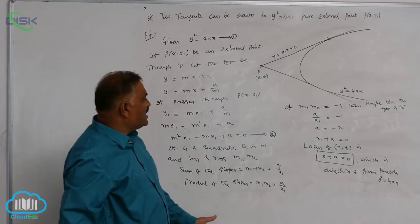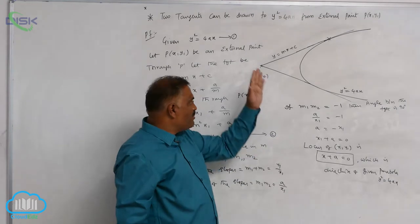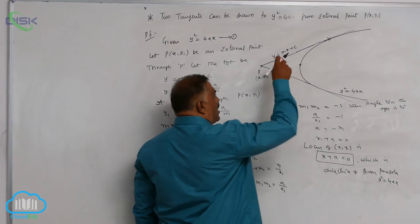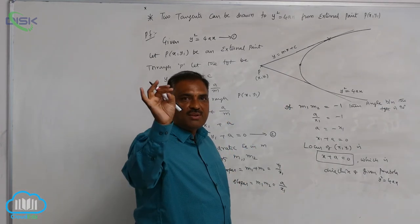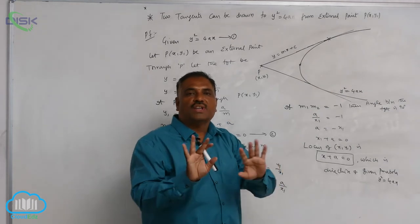It is very clear that two tangents can be drawn to a parabola from external point. Suppose the point goes and stays here on the curve, there is only one possible tangent. And if the point lies inside, no tangent can be drawn.